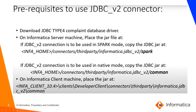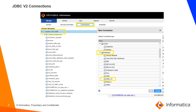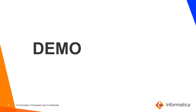This is a screenshot taken from the Informatica 10.4 admin console. Under domain connections and databases, there is a new connector called JDBC v2, which can be used to create a new JDBC v2 connection and run a mapping having a source or target as a JDBC v2.